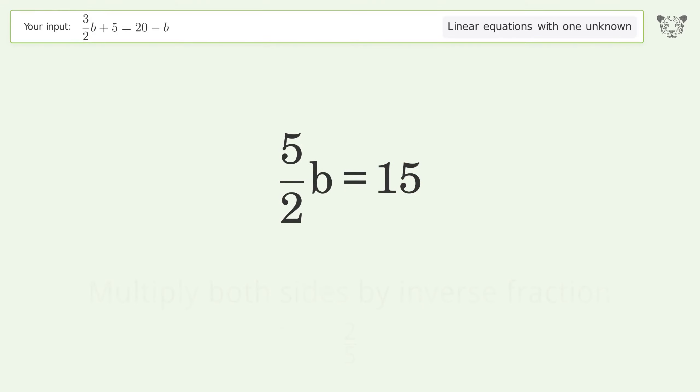Isolate the b. Multiply both sides by inverse fraction 2 over 5.